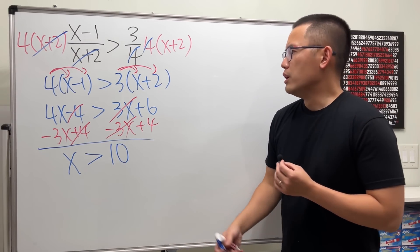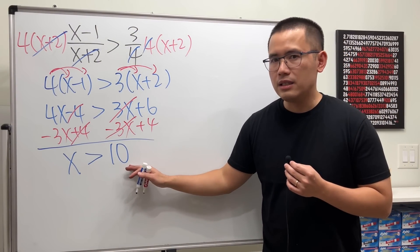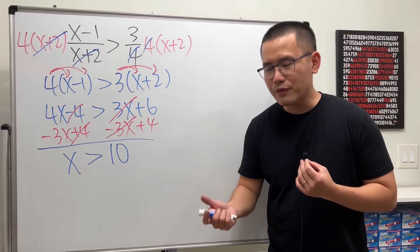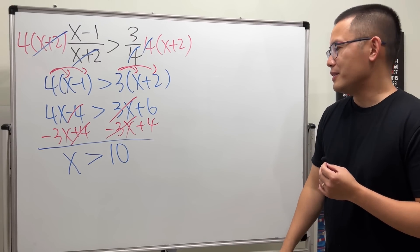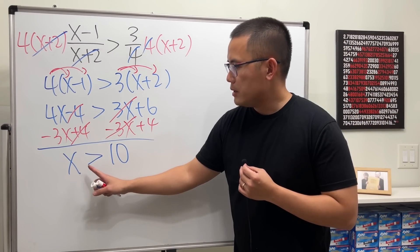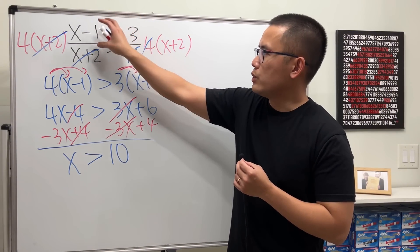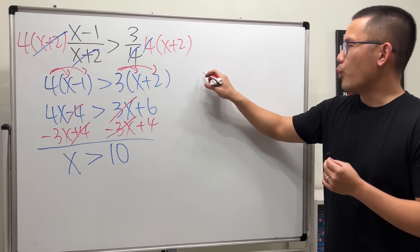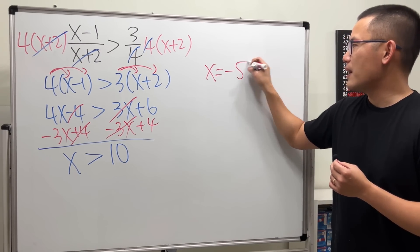It looks totally okay, right? But unfortunately this is not all the solutions — this is only part of the solutions. We are saying x has to be greater than 10, but what if x is equal to a negative number such as negative 5?